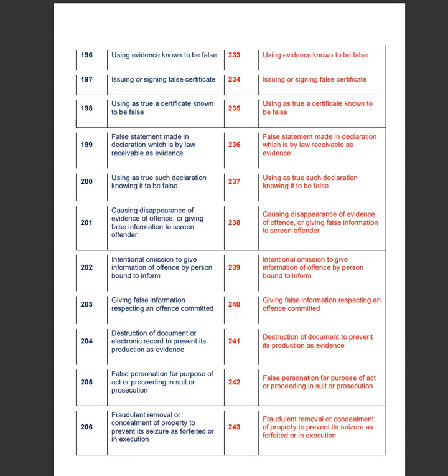Section 196 of the IPC deals with using evidence known to be false, whereas Section 233 of the BNS deals with using evidence known to be false.